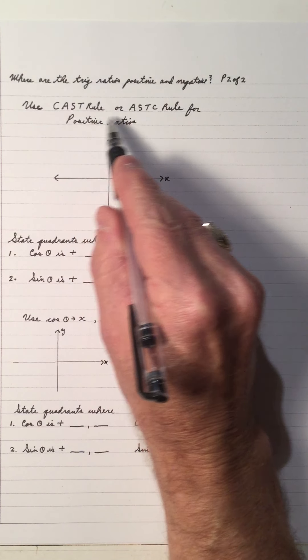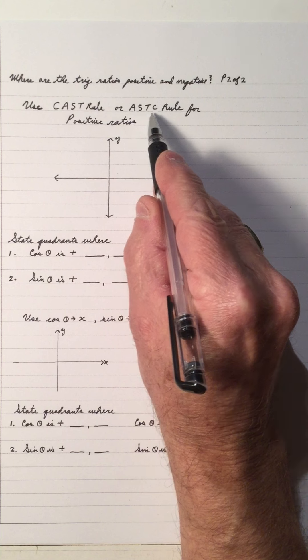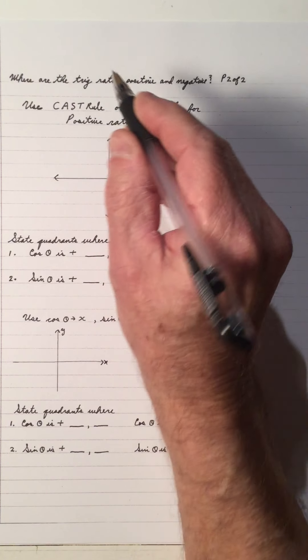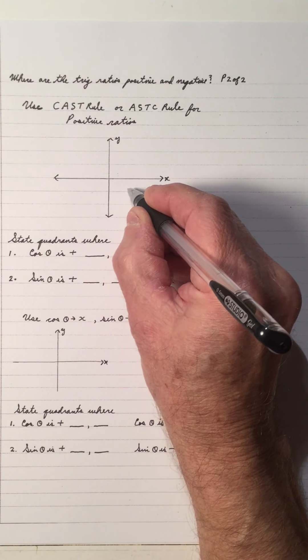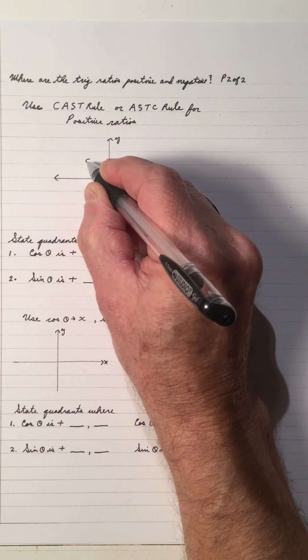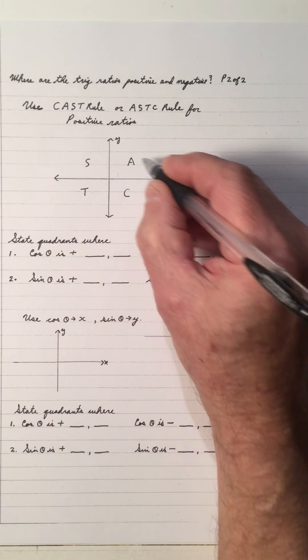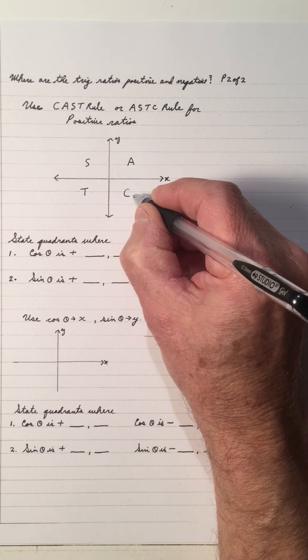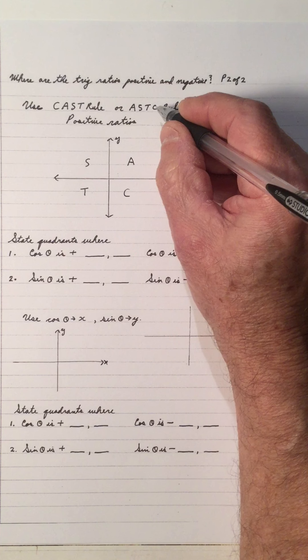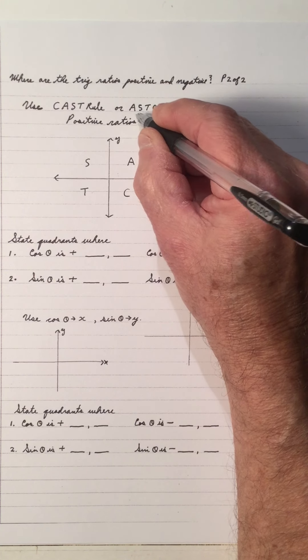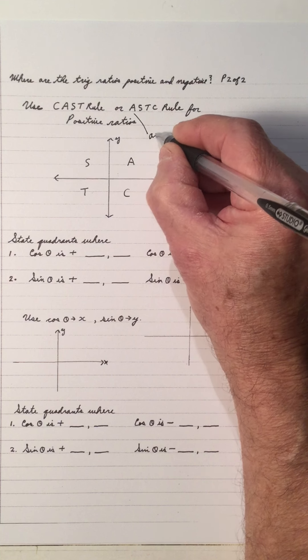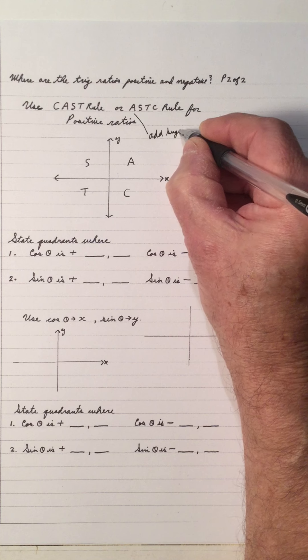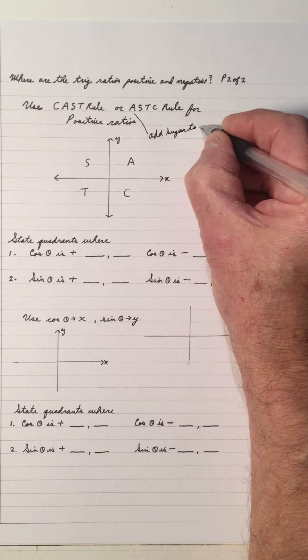Use the CAST rule or ASTC rule for positive trig ratios. The CAST rule is CAST. Now, there's nothing wrong with the CAST rule, but the CAST rule starts in quadrant 4. I prefer to use ASTC, and ASTC is add sugar to coffee.